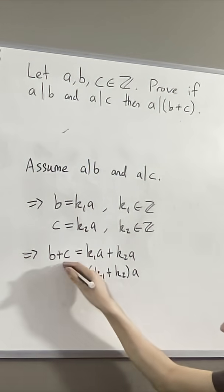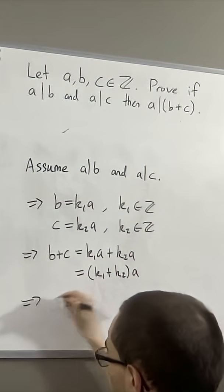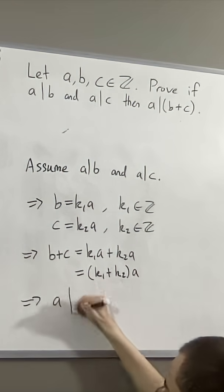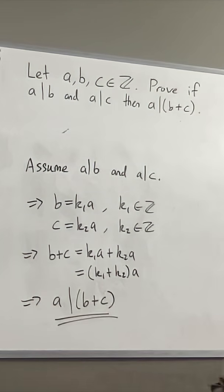So we see that b plus c is equal to some integer times a. But that's precisely what it means for a to divide b plus c. And that is exactly what we wanted to arrive at.